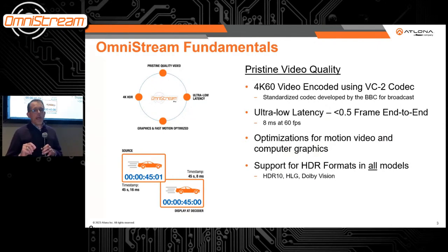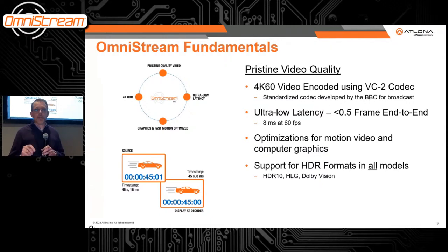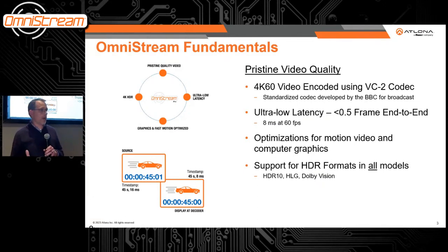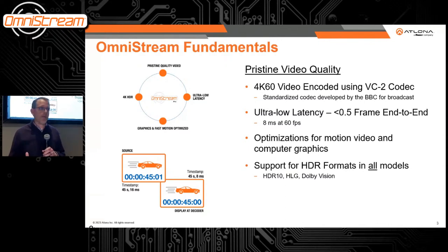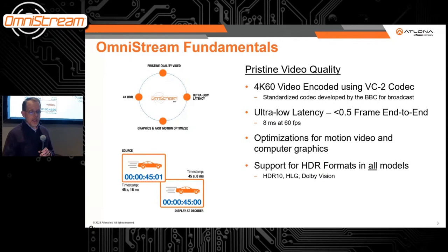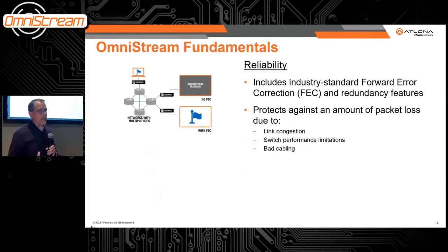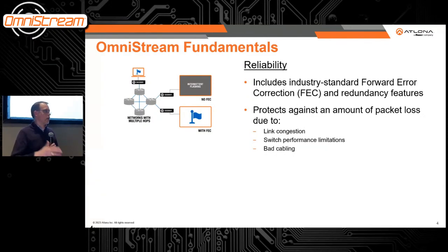There are different takes on Network AV products. Our approach: first, it's a gigabit network device. We had a high priority for pristine video quality — that's always been a design fundamental. We support 4K60 video using the VC2 codec, which was developed by the BBC and then open-sourced. In addition to great video quality, it gives us really low latency, which makes it great for conference rooms, classrooms, and anywhere with latency sensitivity in presentations.